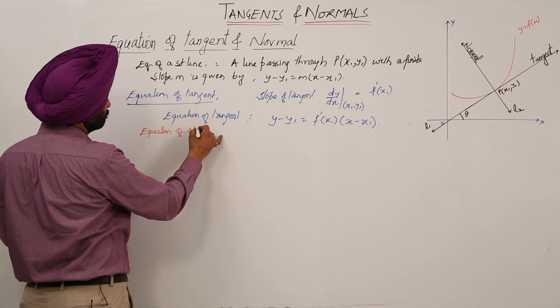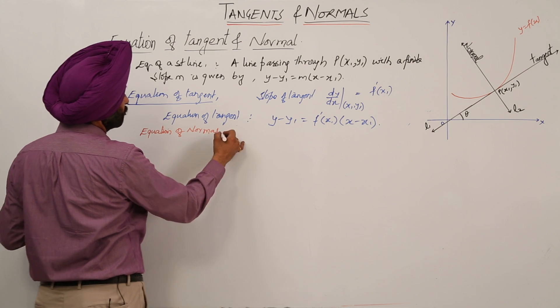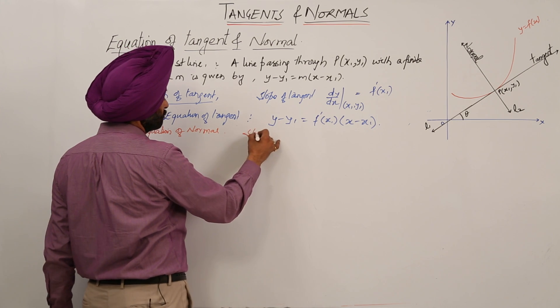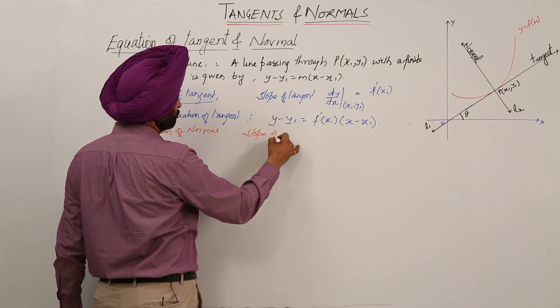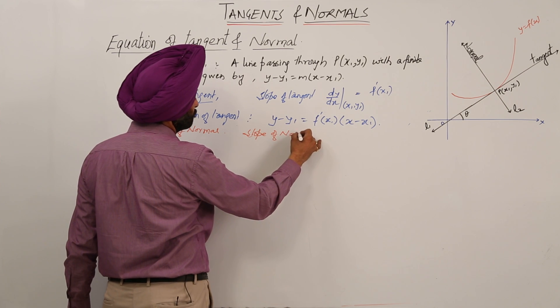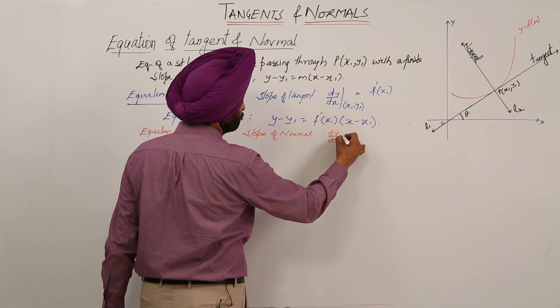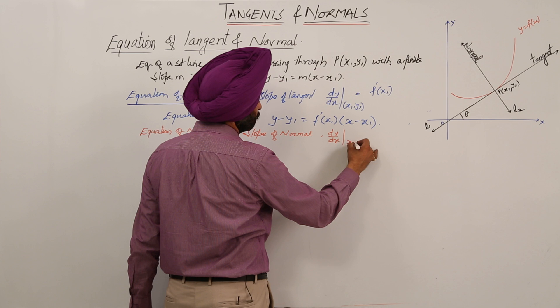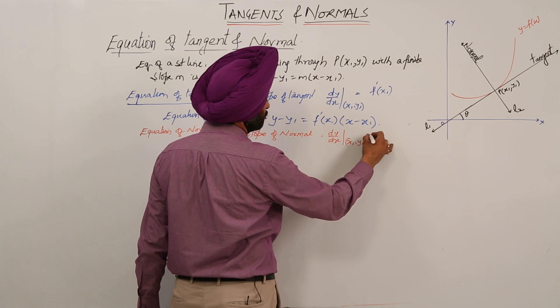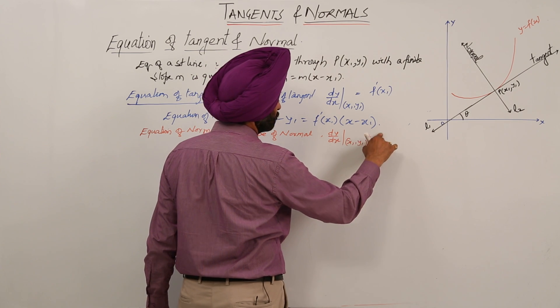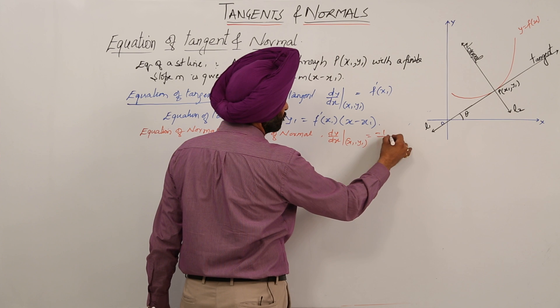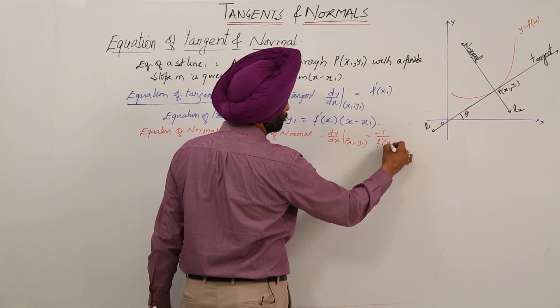Equation of normal. What is the slope of normal? Slope of normal: dy/dx at point (X1, Y1) is equal to minus 1 upon F'(X1).